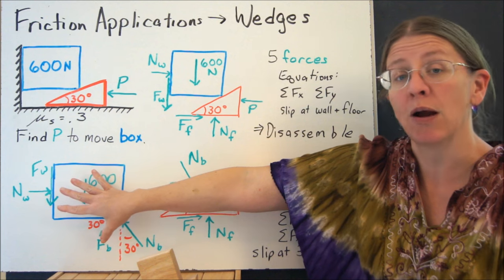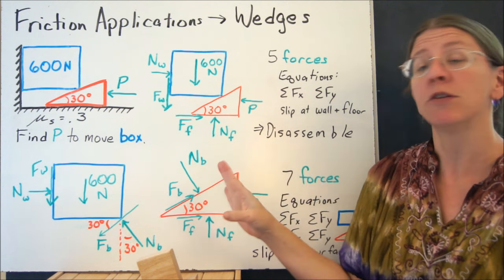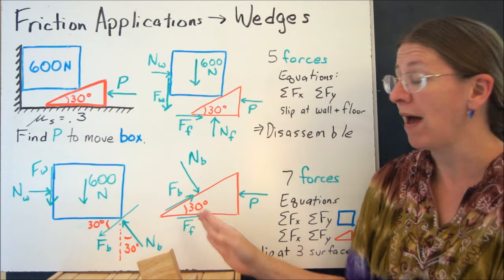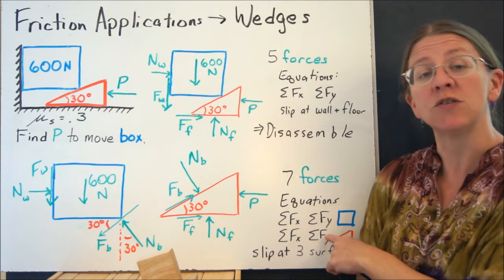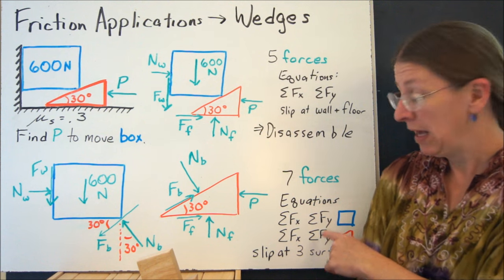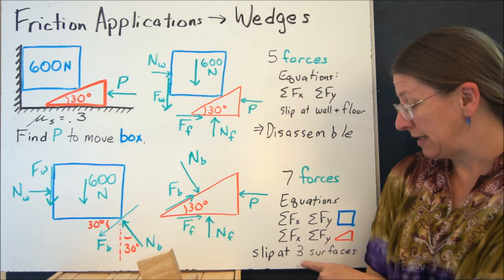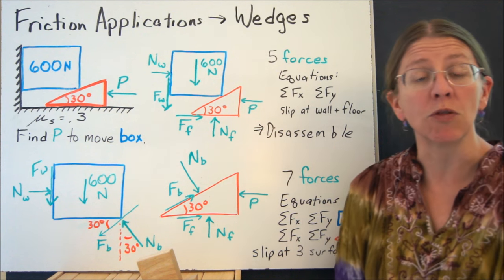If I consider this as two separate things and I disassemble it, I can look at the free body diagram of the blue block and the red wedge. They're both rigid bodies. So if I draw the free body diagram of this one or that one, I should get equations of equilibrium for each of them. That allows us to have four equations of equilibrium.